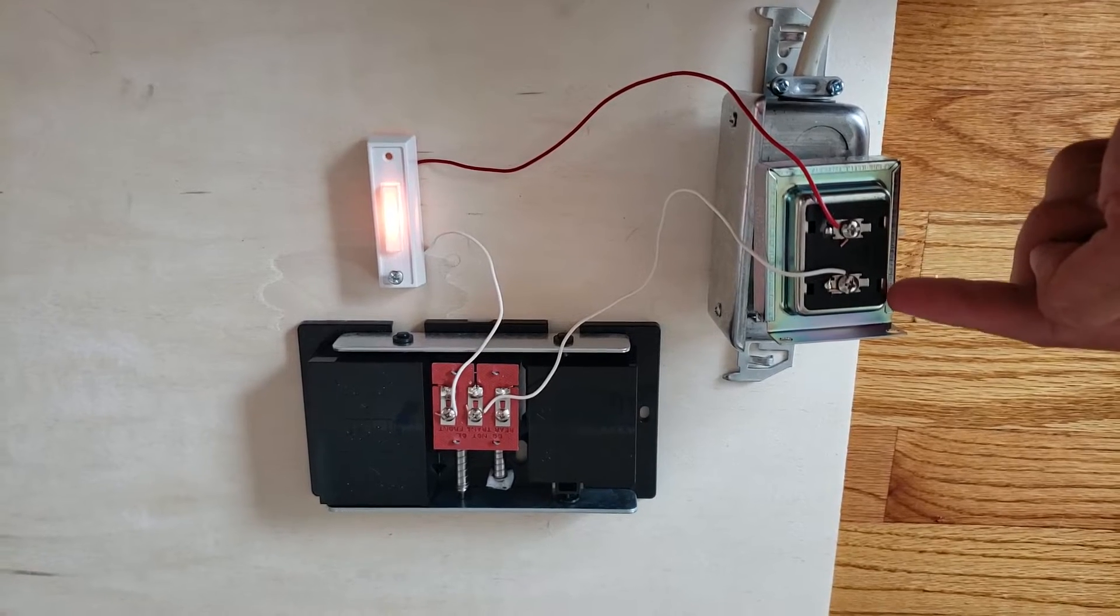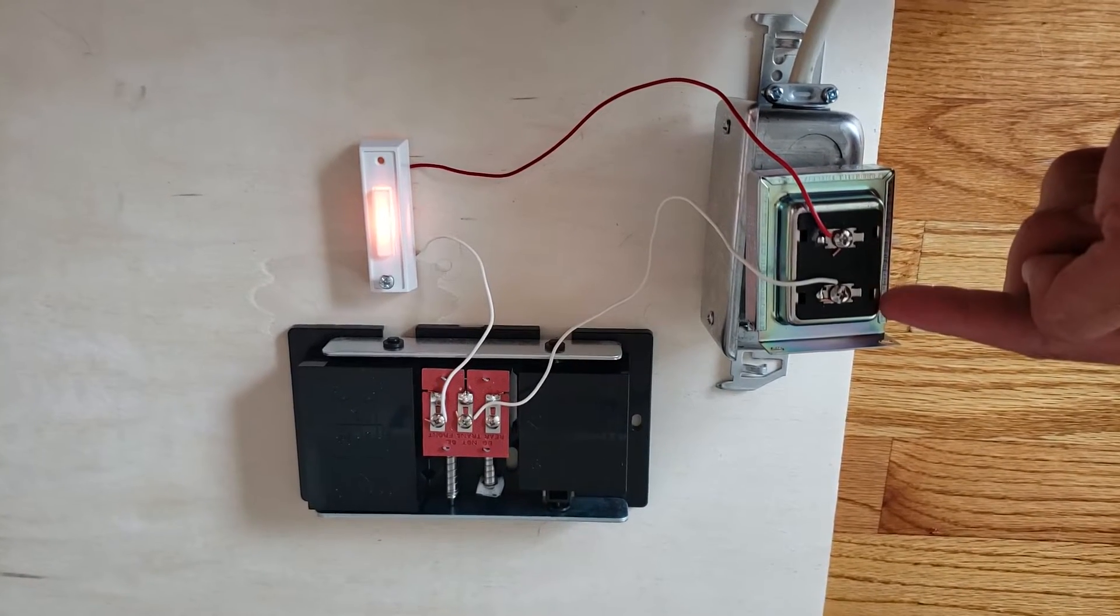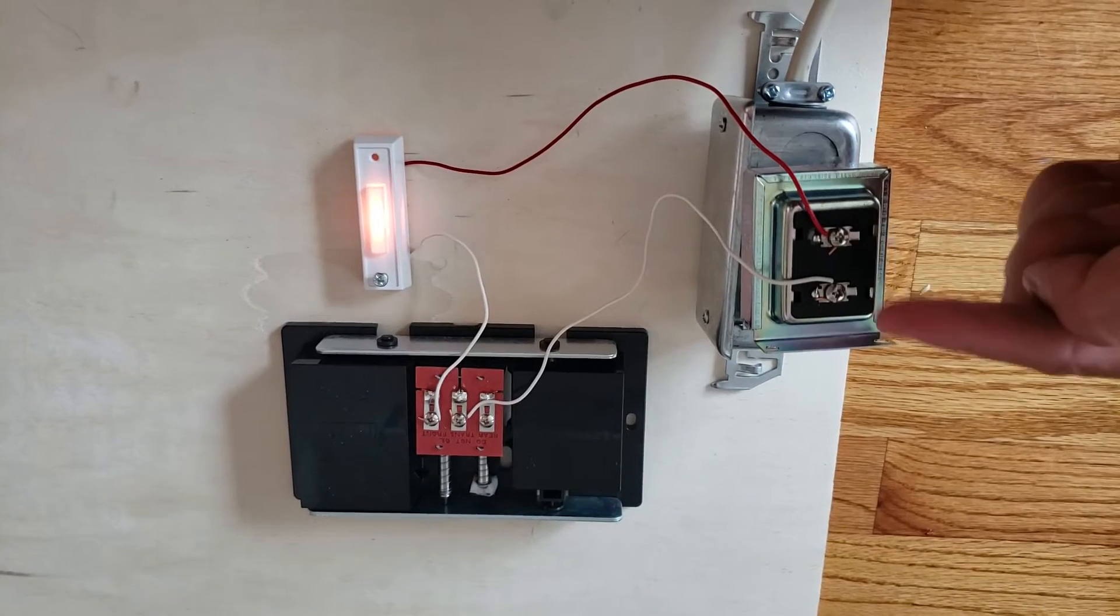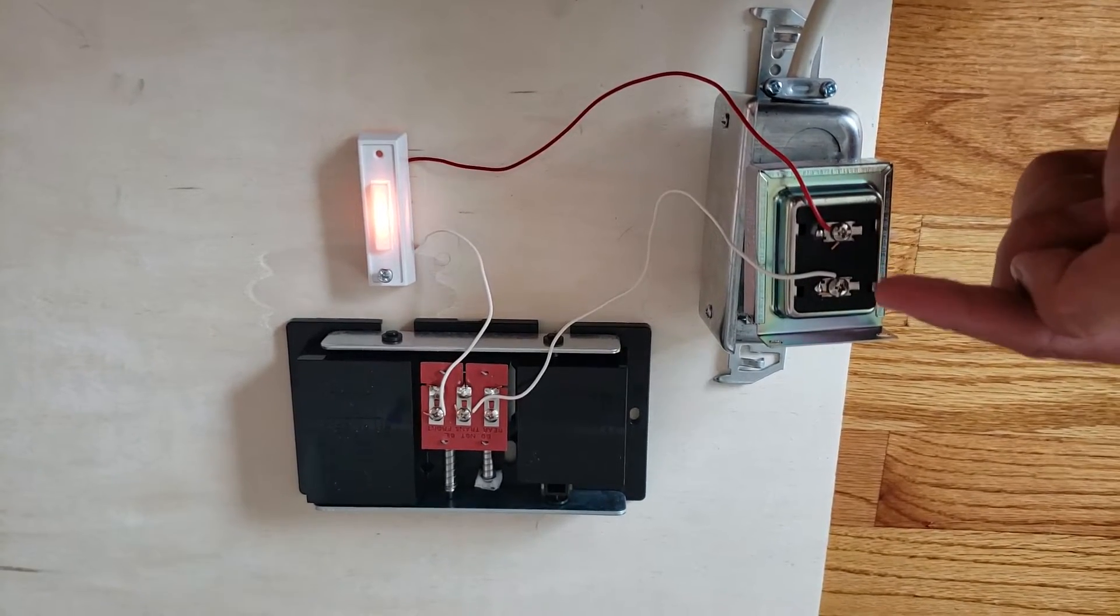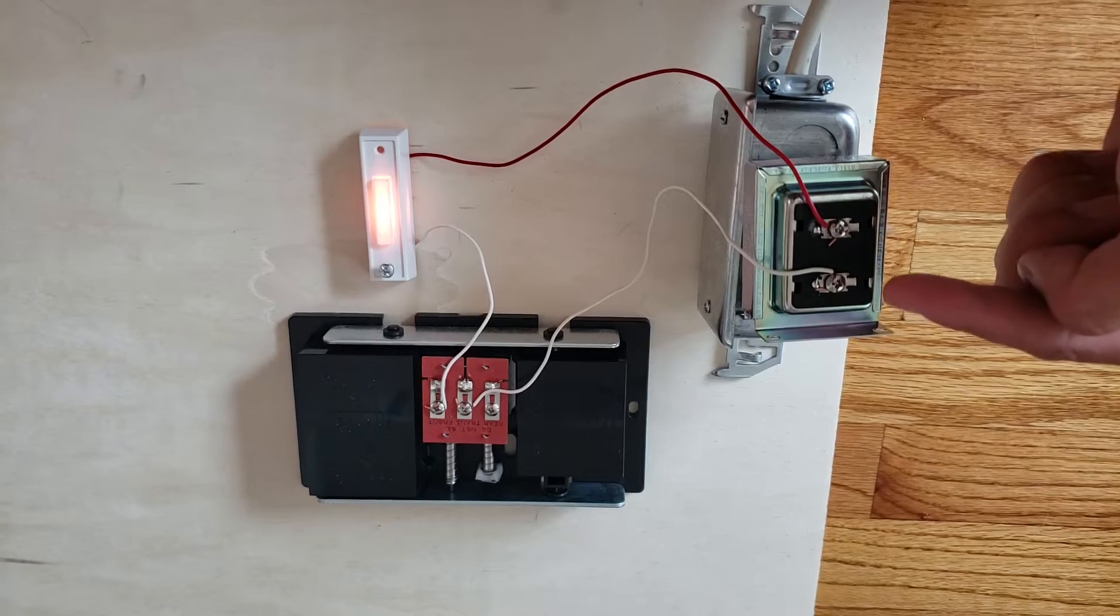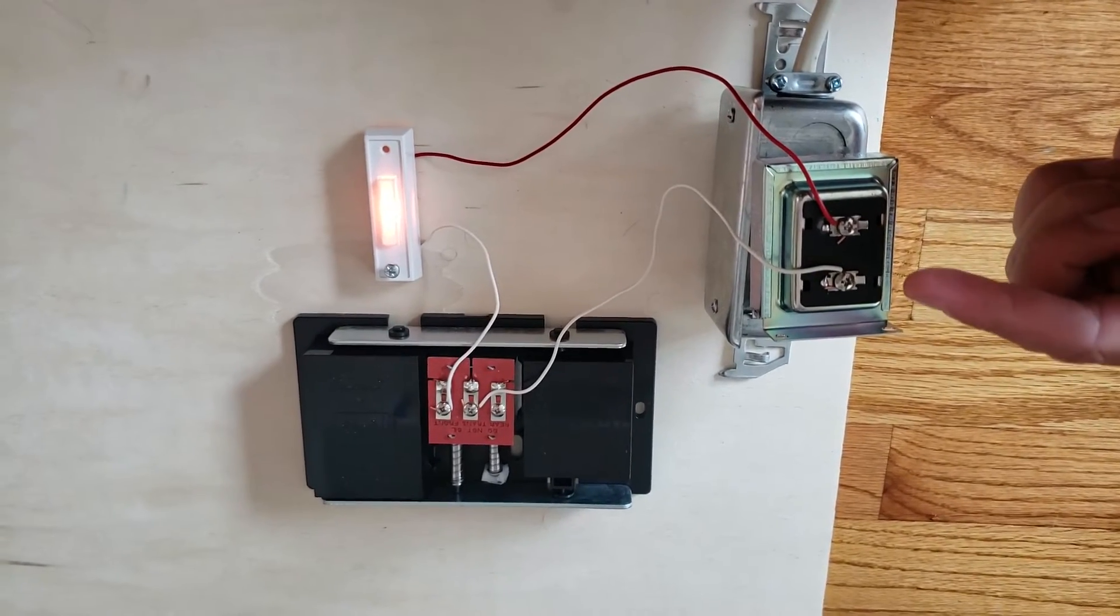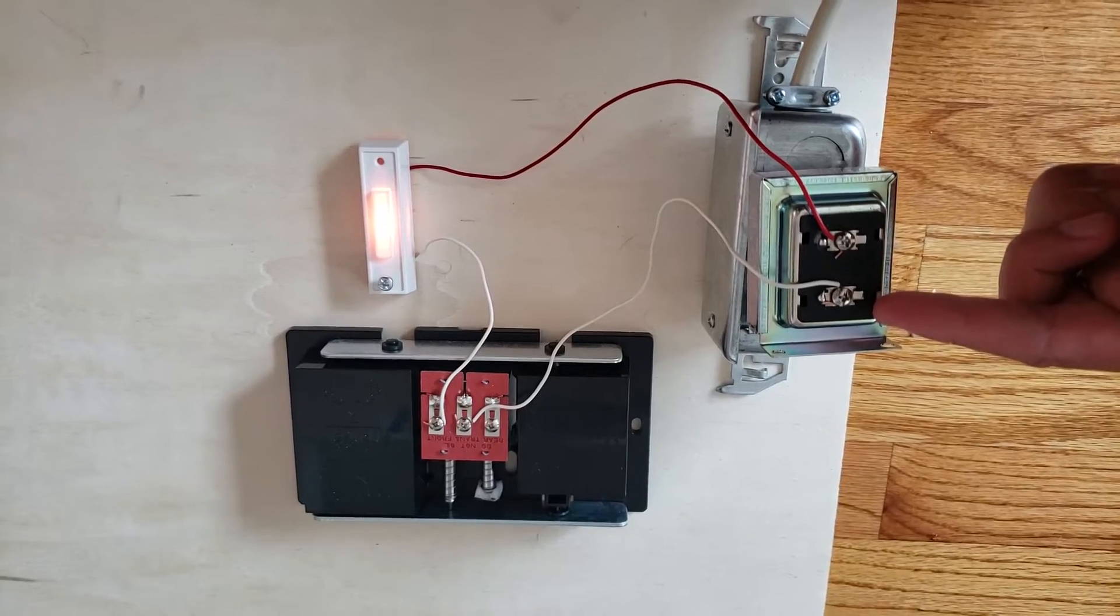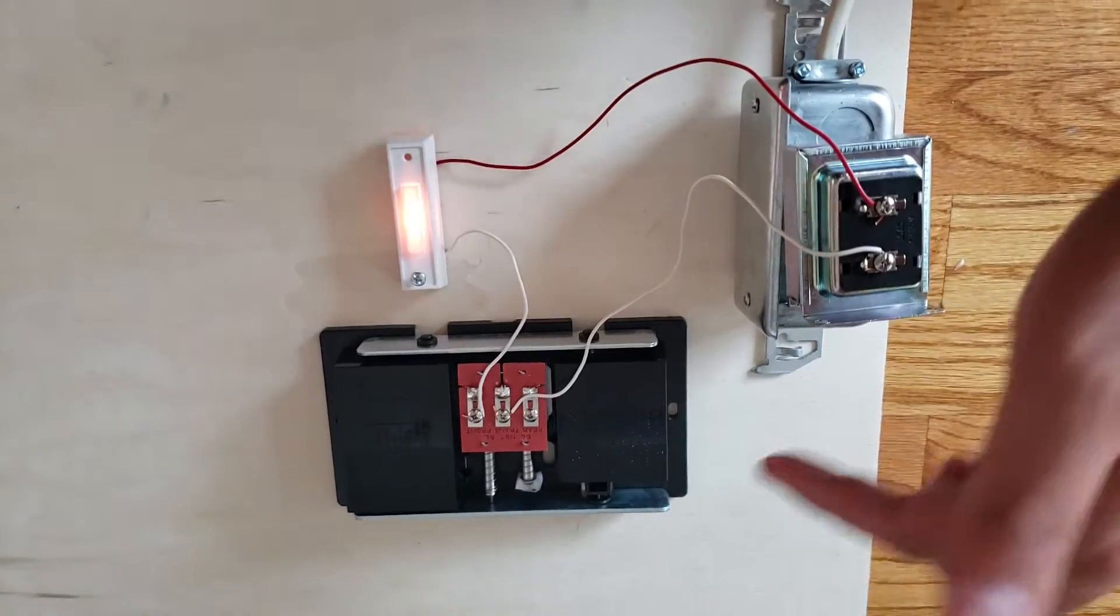Then you've got two wires that come off the transformer. It really doesn't matter which color you use for each, it just really matters where you wire each wire and how it completes the circuit. So you've got one wire that's going to go from your transformer to the doorbell chime.